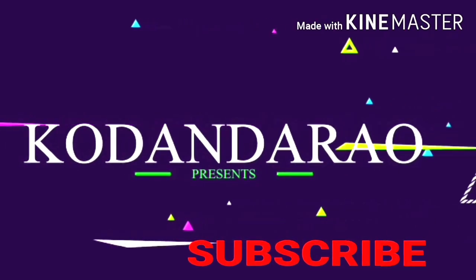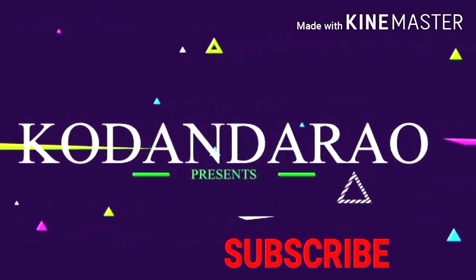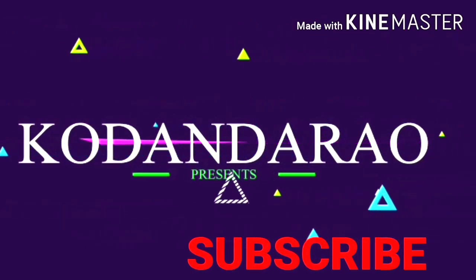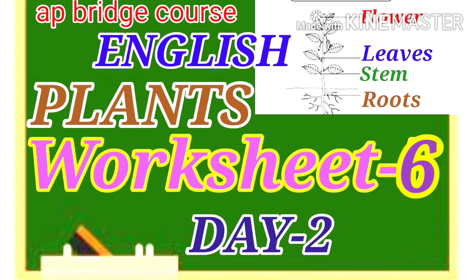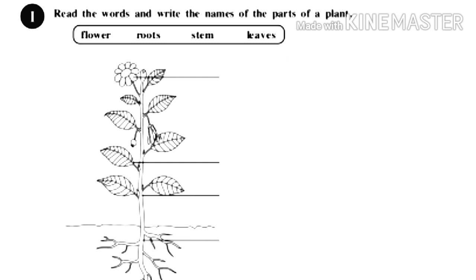Hi friends, welcome to my channel. Please do subscribe, like and share. Bridge course plants worksheet number six, day two program. Read the words and write the names of the parts of a plant: flower, roots, stem, leaves.